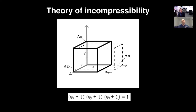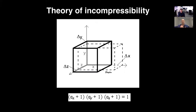The theory of incompressibility means that if you take a block of rubber and squish it in one plane, it has to expand in another. It makes sense with heart muscle because you're not taking away any muscle mass as it contracts. Whatever you're changing in the Y and Z plane will get longer in the X plane.